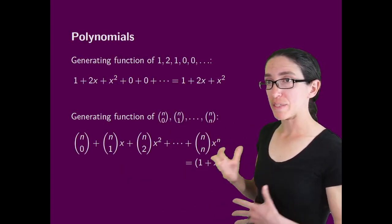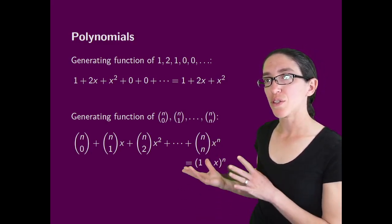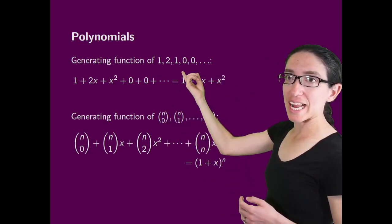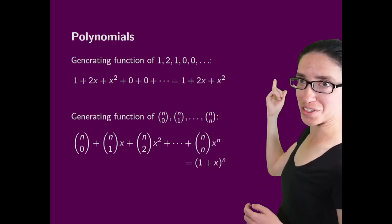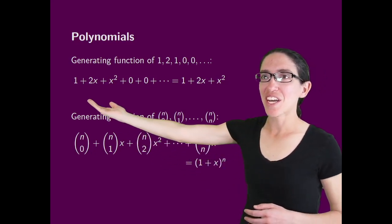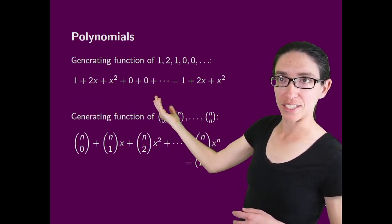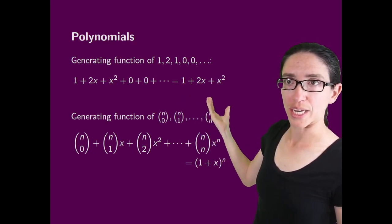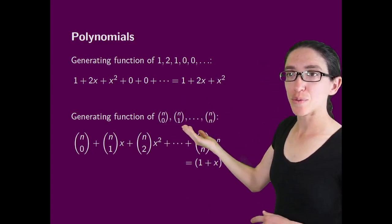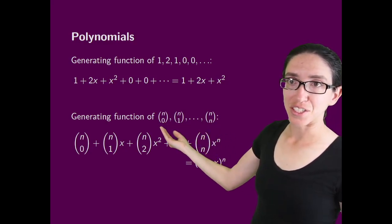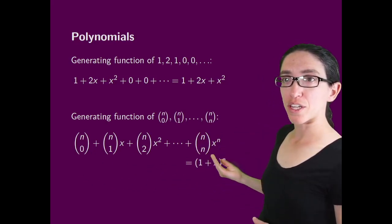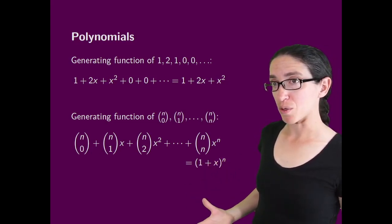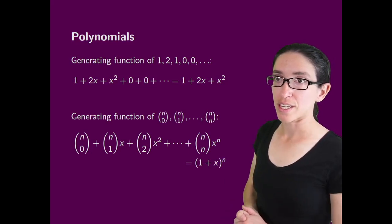Now in the next video we're going to get into how to manipulate generating functions and use them to do some combinatorics. But for now, we're going to look back at polynomials, which are an example of generating functions. In particular, if you have an infinite sequence that after a while is all zeros — like 1, 2, 1, 0, 0, 0, ... up to infinity — then that can be thought of as a finite polynomial, because you don't have to write the zero terms. So this is actually a polynomial generating function: 1 plus 2x plus x squared, for a finite sequence. Here's another famous finite sequence: the nth row of Pascal's triangle, n choose 0, n choose 1, up to n choose n, and that generating function factors as (1 plus x) to the n. Factoring generating functions is going to be a very powerful tool in solving for the coefficients, or understanding them in a more combinatorial way.